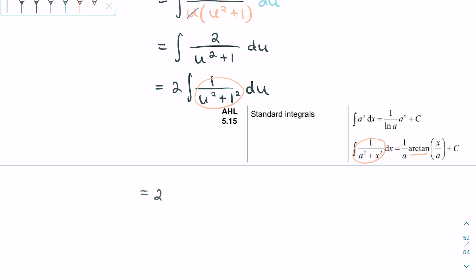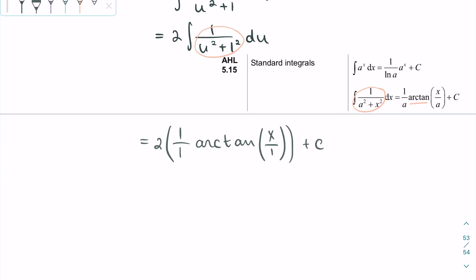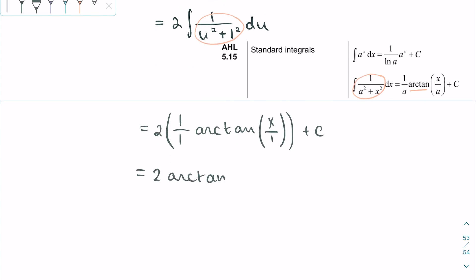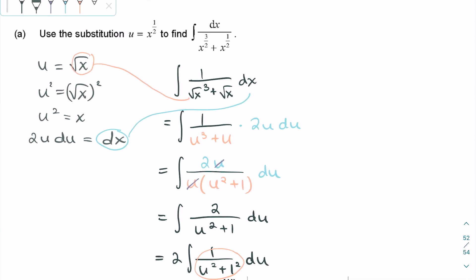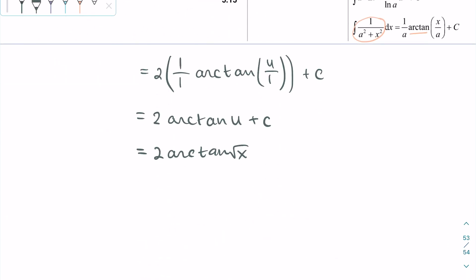Our variable is u and a is 1 in this case. As our answer needs to be in terms of x, we replace u with square root of x.